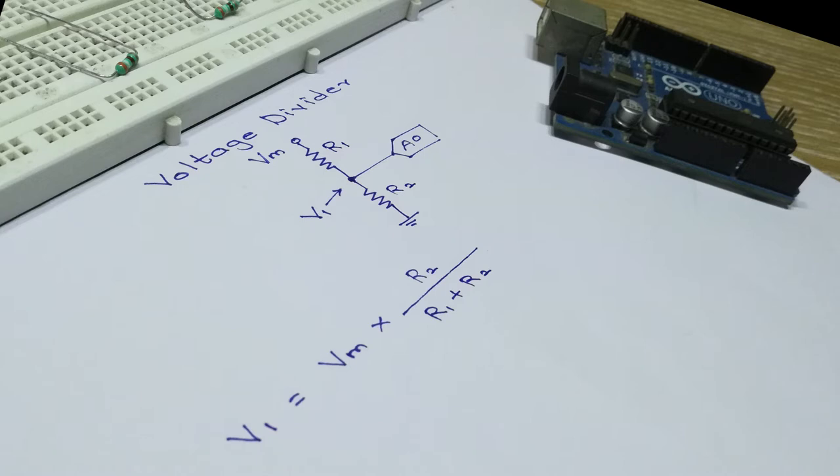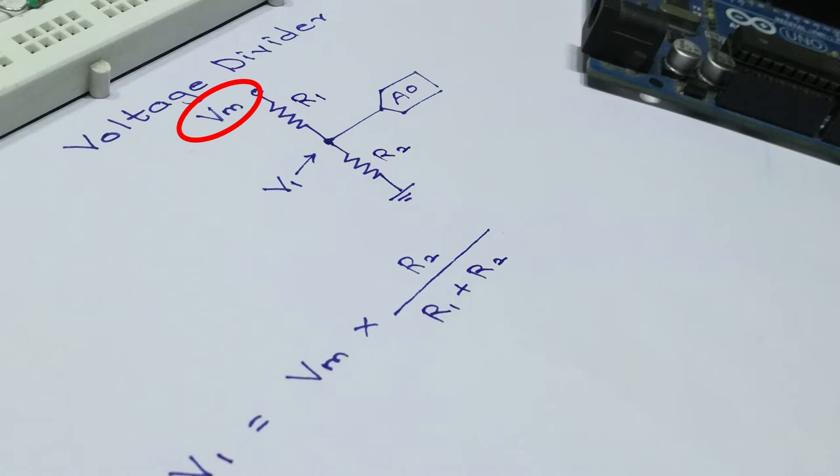First determine the maximum voltage which is to be measured. Decide a suitable and standard value for R1 in kilo ohm range. Using the formula calculate R2. If the value of R2 is not or close to a standard value, change R1 and repeat the above steps. Since Arduino can handle a maximum of 5 volts, V1 is equal to 5 volts.